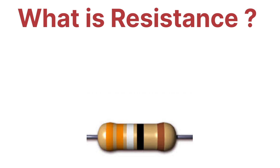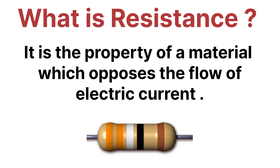First of all, let's see what is resistance. Resistance is very simple and easy to understand. Resistance is nothing but the property of an element by which it opposes the flow of electrons or the flow of charge carriers, and we can also call it the opposition to the flow of electric current. So resistance is the property of an element which opposes the flow of electric current in a circuit. This is the definition of resistance.